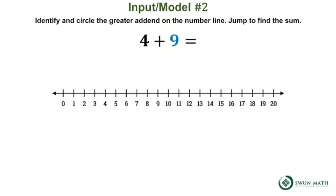Let's find and circle 9 on the number line. 4 is the other addend and we will jump that many times to the right to find the sum. 1, 2, 3, 4.